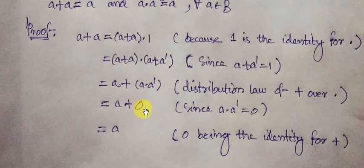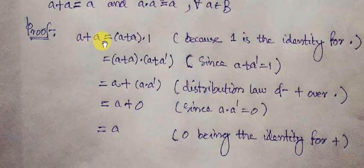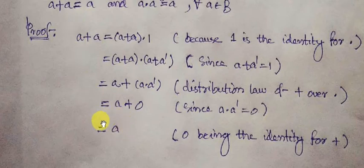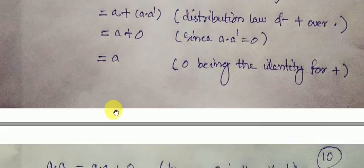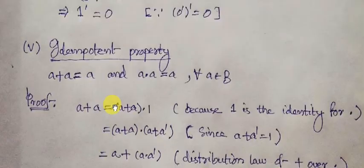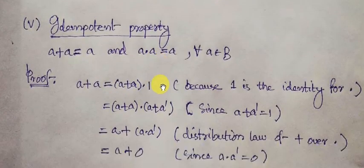Since 0 is the additive identity element, A plus 0 equals A. So what we have proved is: A plus A equals A. Next, we shall concentrate on the case of multiplication — that means we shall prove A dot A equals A.